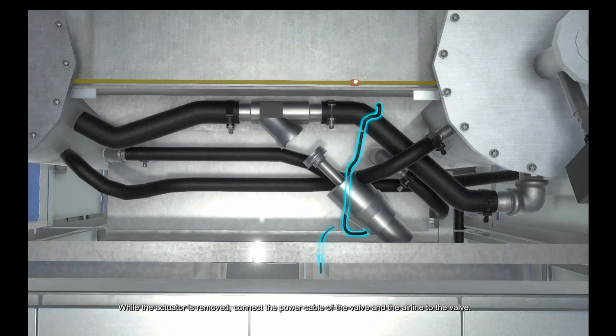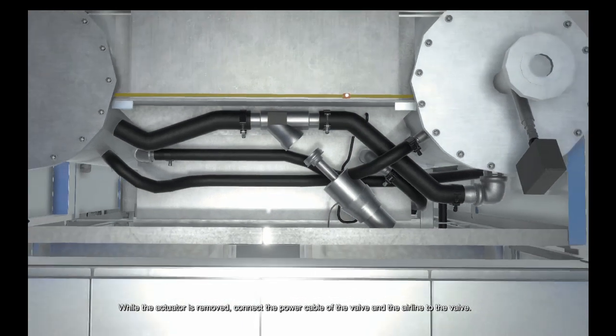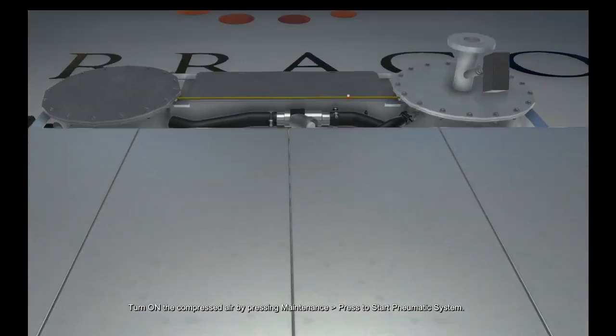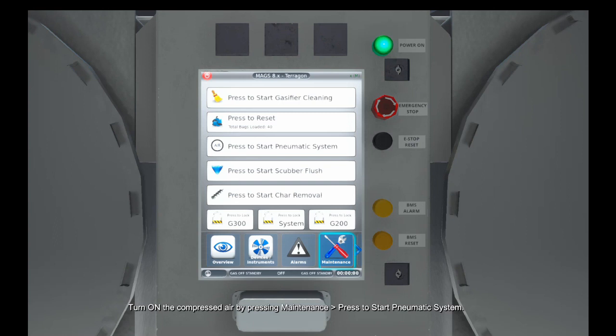While the actuator is removed, connect the power cable of the valve and the air line to the valve. Turn on the compressed air by pressing Maintenance, Press to start pneumatic system.